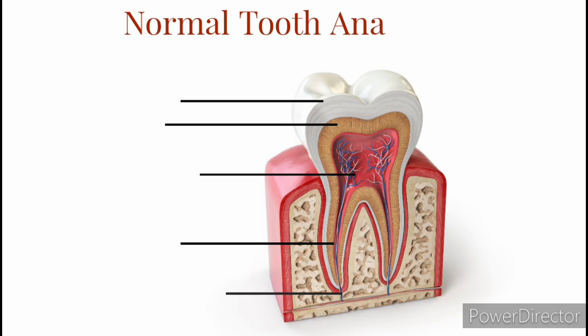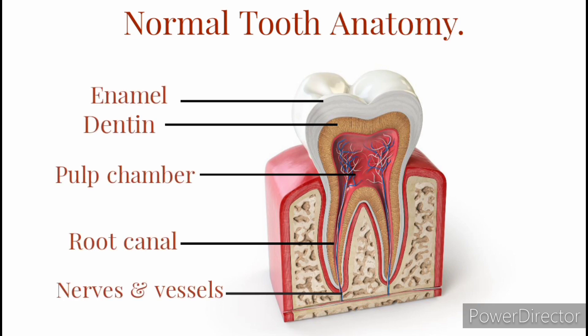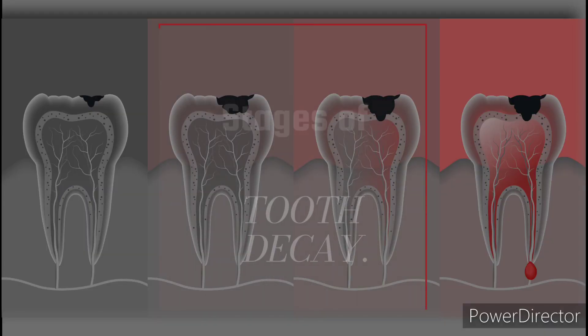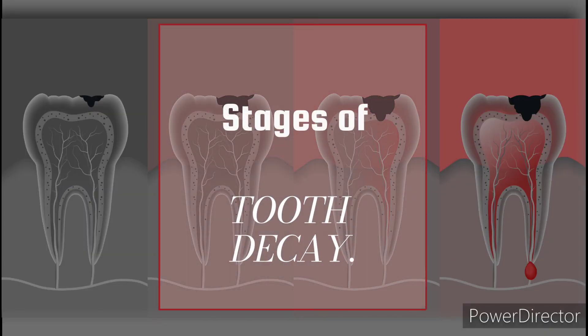Normal tooth anatomy. Tooth decay progresses through five stages — here's a look at each one.